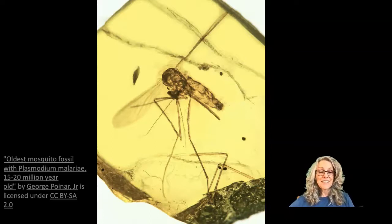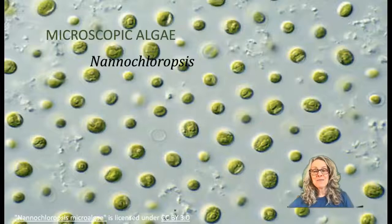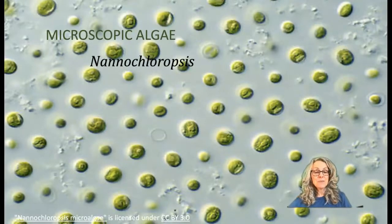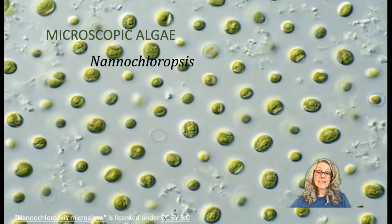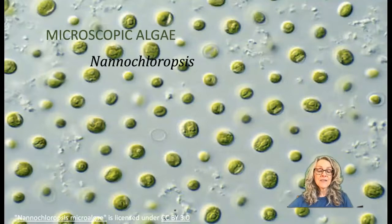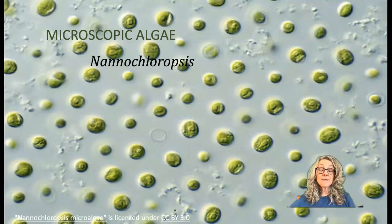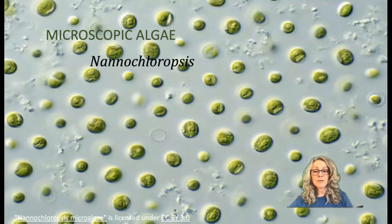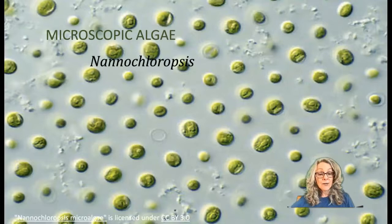Another category of microorganisms are the microscopic algae, such as this Nannochloropsis. Microscopic algae are photosynthetic. They are single cells; they live in communities, or they can gather together in long chains. They are not known to cause human disease, but many species give off a toxin that can be harmful to humans. This is a eukaryotic photosynthetic cell.